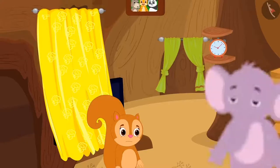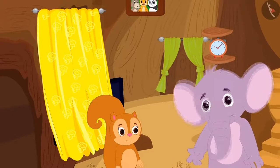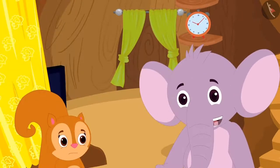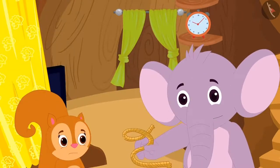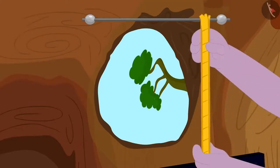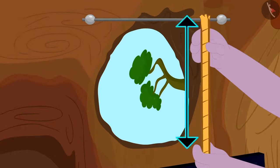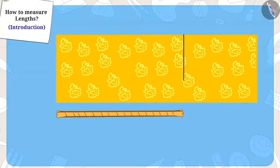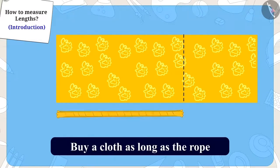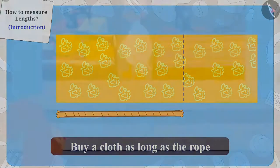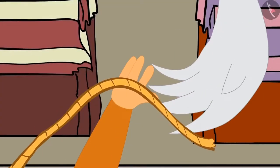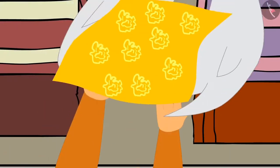Chanda became sad. Just then, Appu came to meet her. He asked her the reason why she was so sad, and Chanda told him the whole story. Appu started laughing and said, 'Is this all?' He immediately took a rope and measured the length of Chanda's window with it. He cut the exact length of the rope that measured Chanda's window and told her that she has to buy a cloth as long as the rope from uncle's shop. Chanda again went to uncle's shop and this time bought a cloth as long as the length of the rope with which Appu had measured the window.